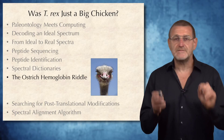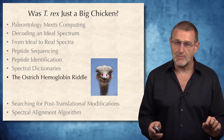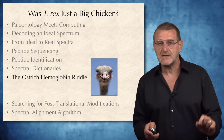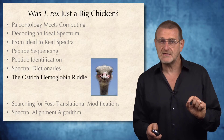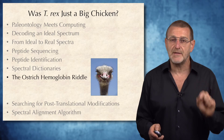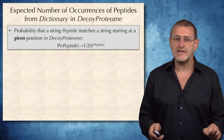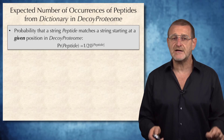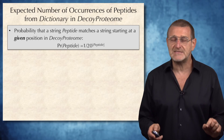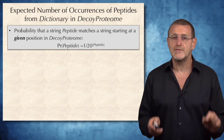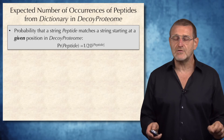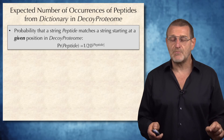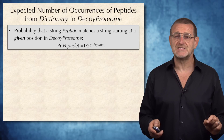Our goal now is to solve the monkey and the typewriter problem for the case of spectral dictionary. And after we solve this problem, we will see that it will lead us, surprisingly, to ostrich hemoglobin. Let's start from finding the probability that a string peptide matches a string started at a given position in a decoy protein. And this probability is, of course, 1 over 20 to the power of the length of the peptide.